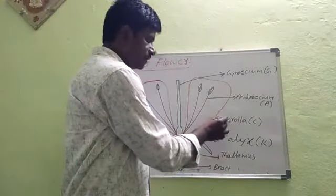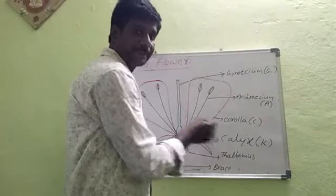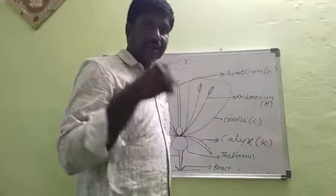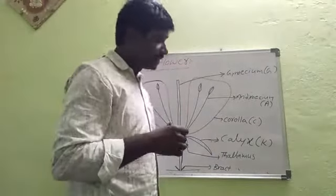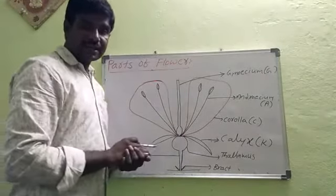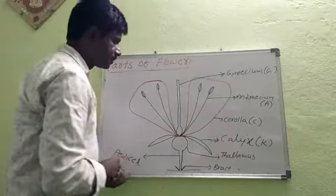Both calyx and corolla are called perianth. Calyx and corolla may be present or absent in flower. So calyx and corolla are also called non-essential organs.